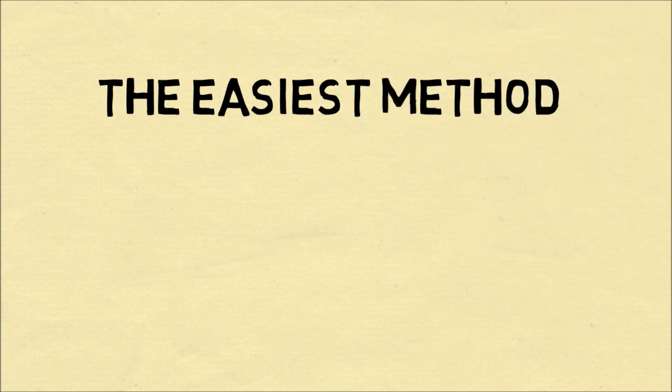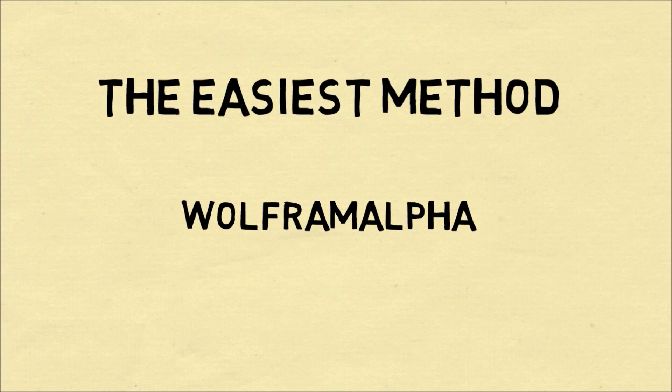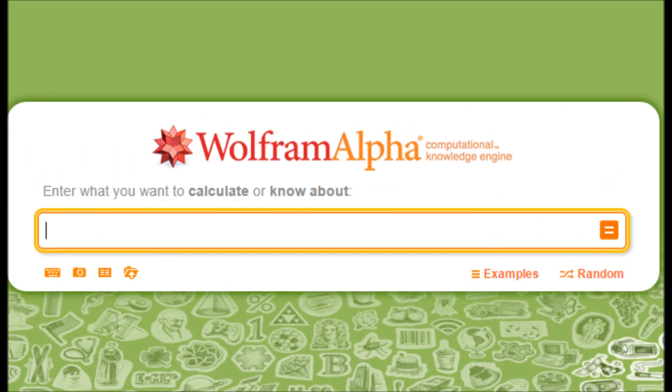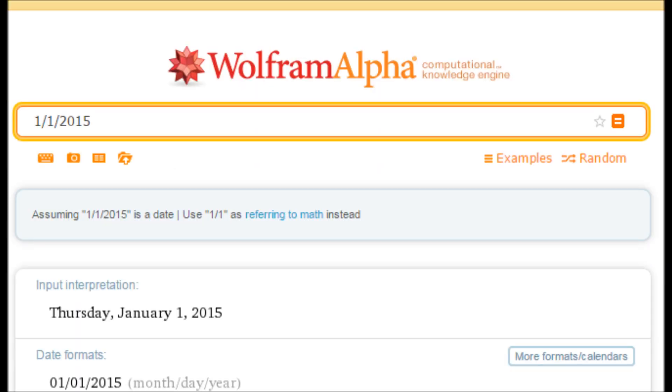The easiest way to do this is to use a spreadsheet or to use a website like Wolfram Alpha. Wolfram Alpha is very easy to use. You simply type in the date and it will tell you the day of the week. So 2015, the New Year starts on a Thursday.